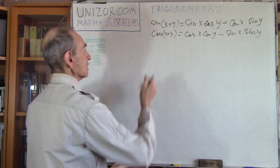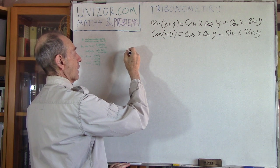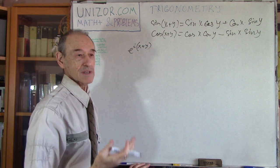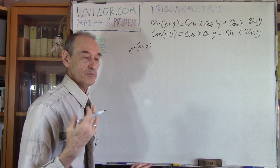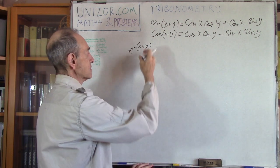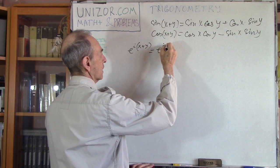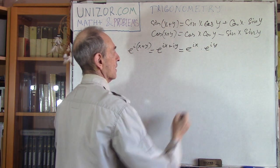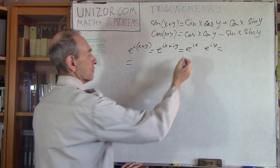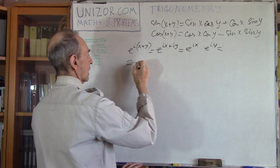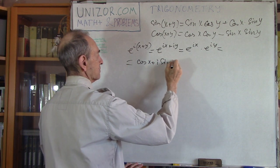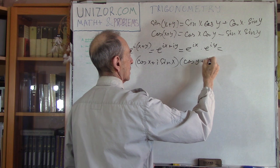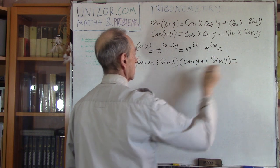So let's just do the following. E to the power i(x+y), considering this is a function that satisfies all the regular rules of raising to a power, is equal to e^(ix + iy) which equals e^(ix) times e^(iy). Now I'm using Euler's formula for each factor: e to the power ix is cosine x plus i·sine x, and e to the power iy is cosine y plus i·sine y.